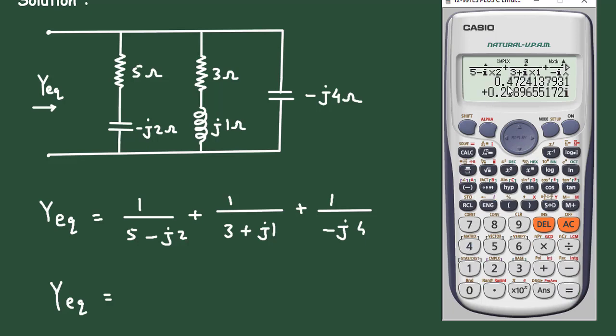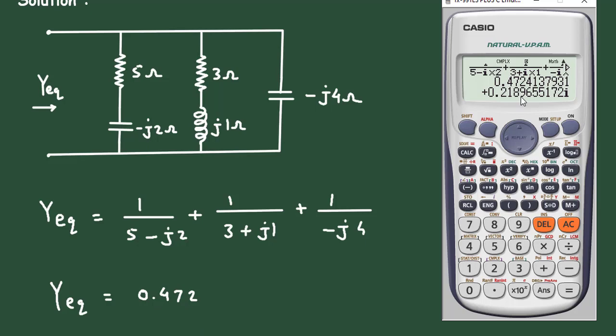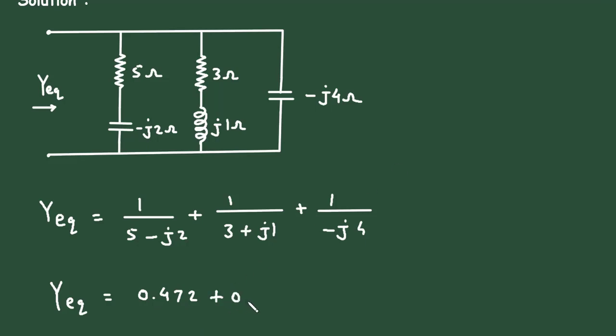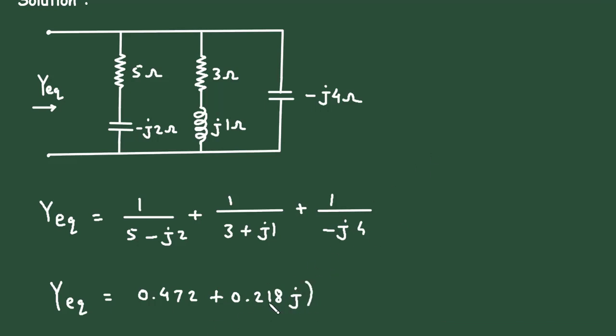Now this is 0.472 plus 0.218j. Now here, this is admittance, so its unit will be Siemens. So this is what we have to find in this problem.